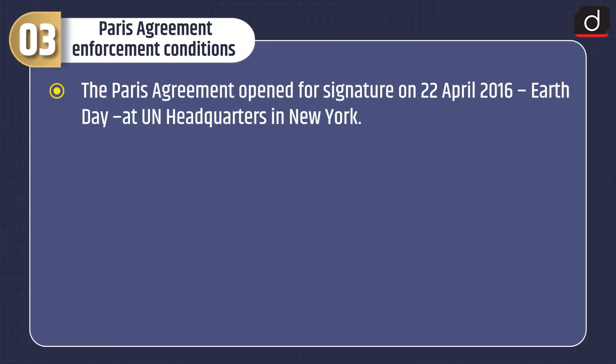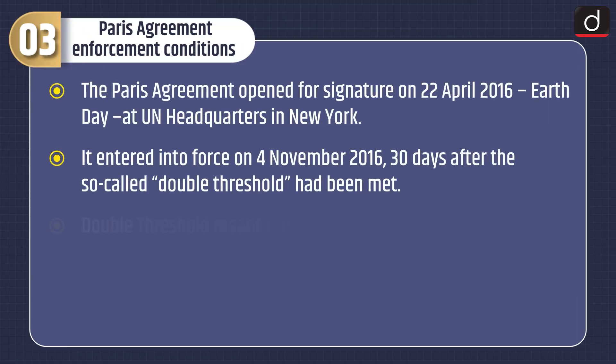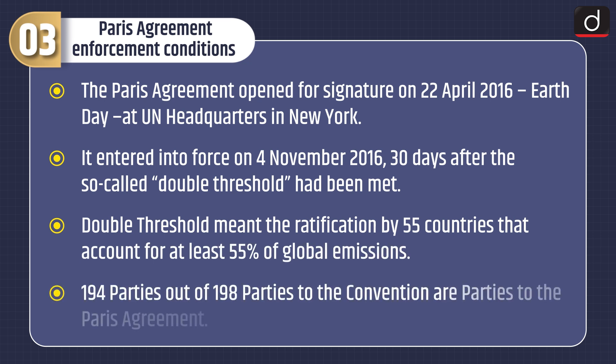Now let's look at the Paris Agreement enforcement conditions. The Paris Agreement opened for signature on 22 April 2016 — Earth Day — at UN Headquarters in New York. It entered into force on 4 November 2016, 30 days after the so-called double threshold had been met. The double threshold meant ratification by 55 countries that account for at least 55% of global emissions. 194 parties out of 198 parties to the Convention are parties to the Paris Agreement.